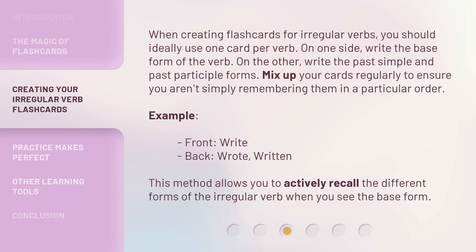When creating flashcards for irregular verbs, you should ideally use one card per verb. On one side, write the base form of the verb. On the other, write the past simple and past participle forms. Mix up your cards regularly to ensure you aren't simply remembering them in a particular order.